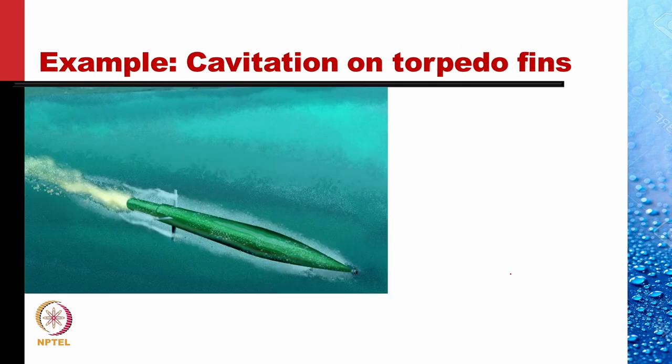Let's do another example — one where cavitation is involved: cavitation on torpedo fins. When torpedoes move, they move at very high speeds. On the fins, the velocity is very large and so cavitation occurs.